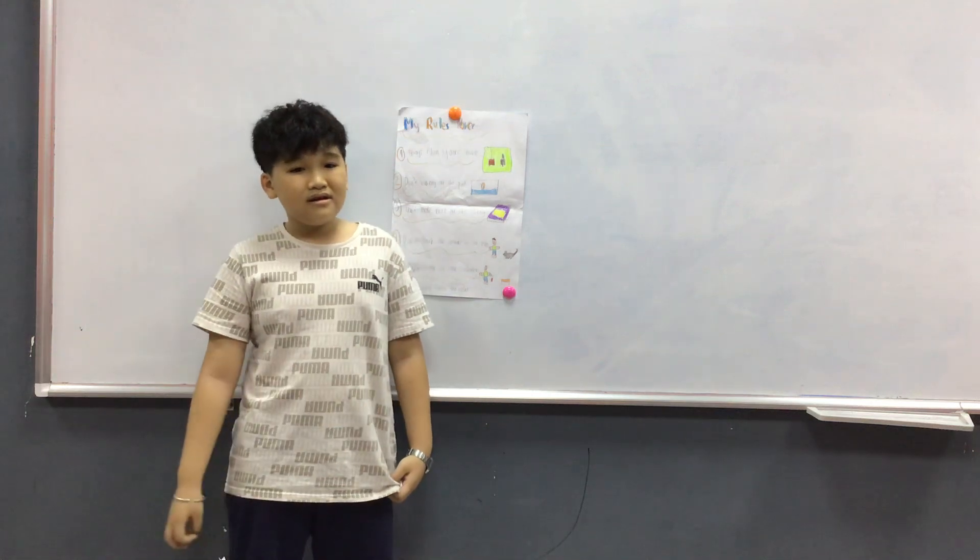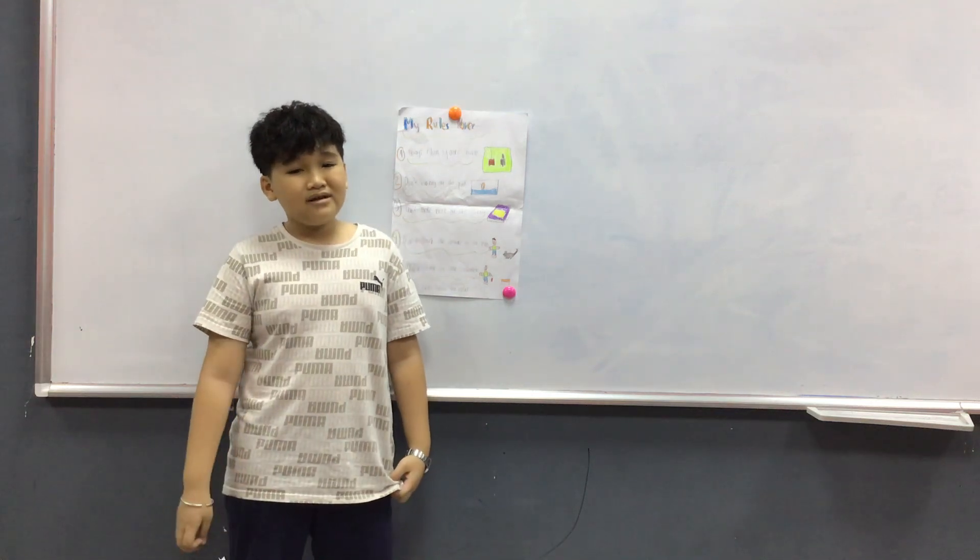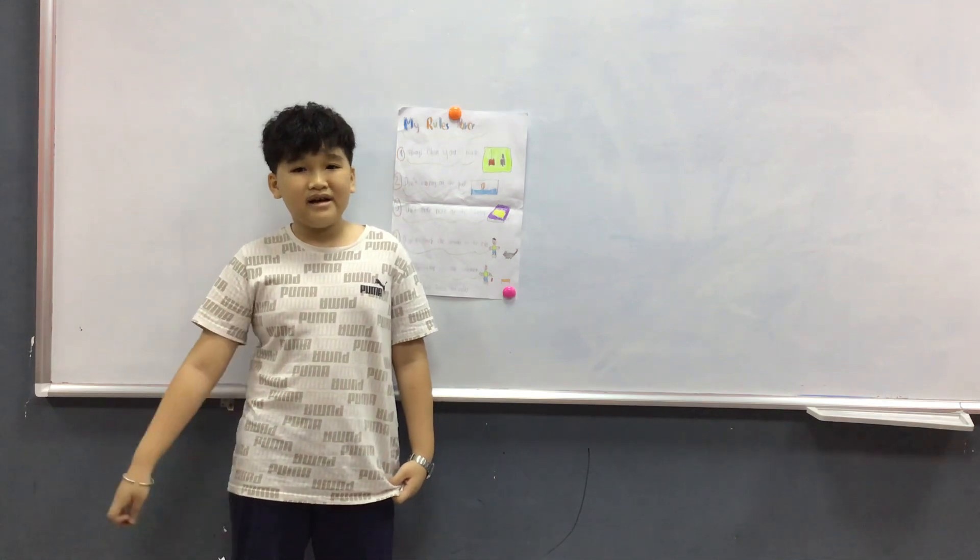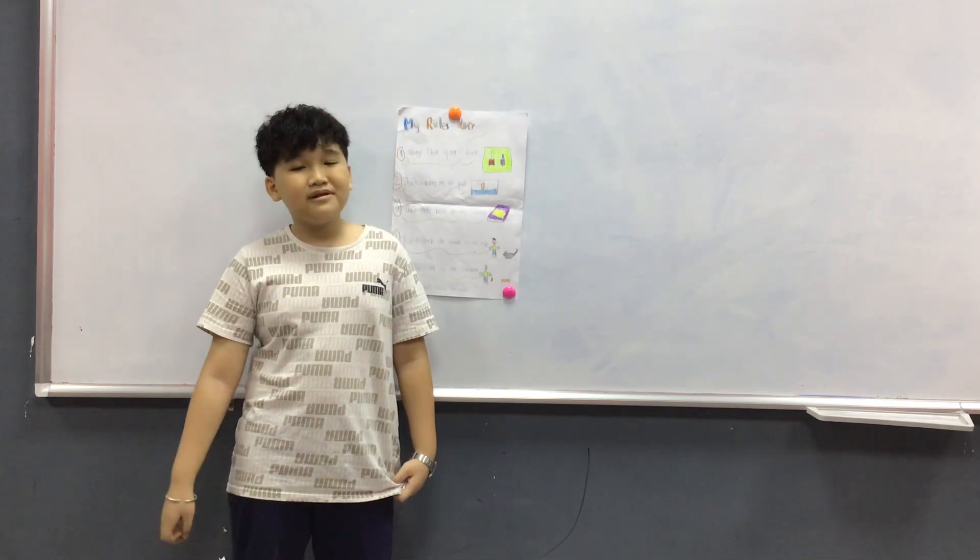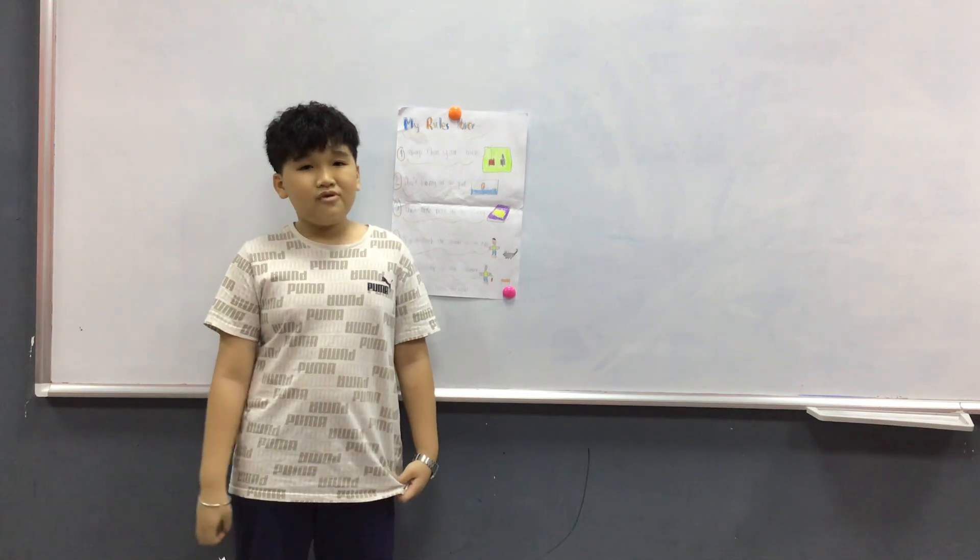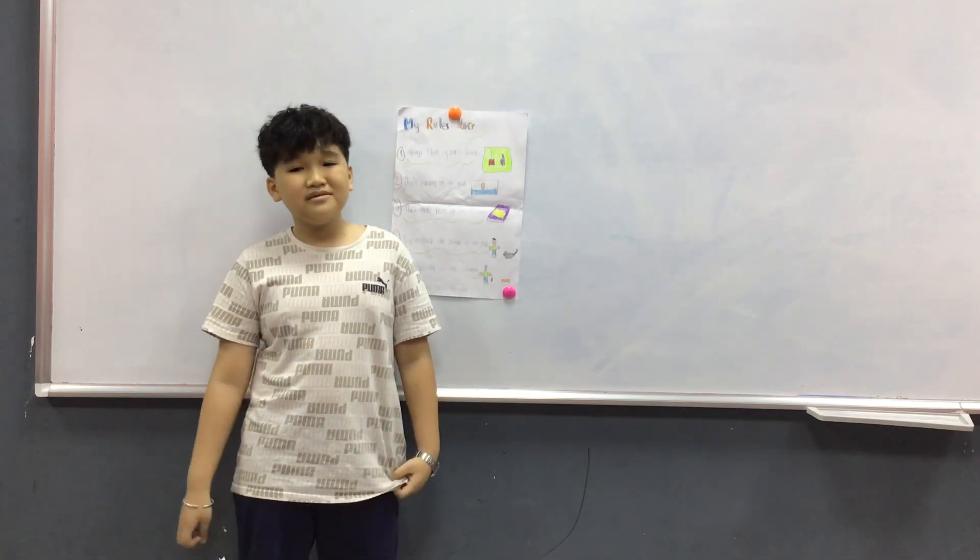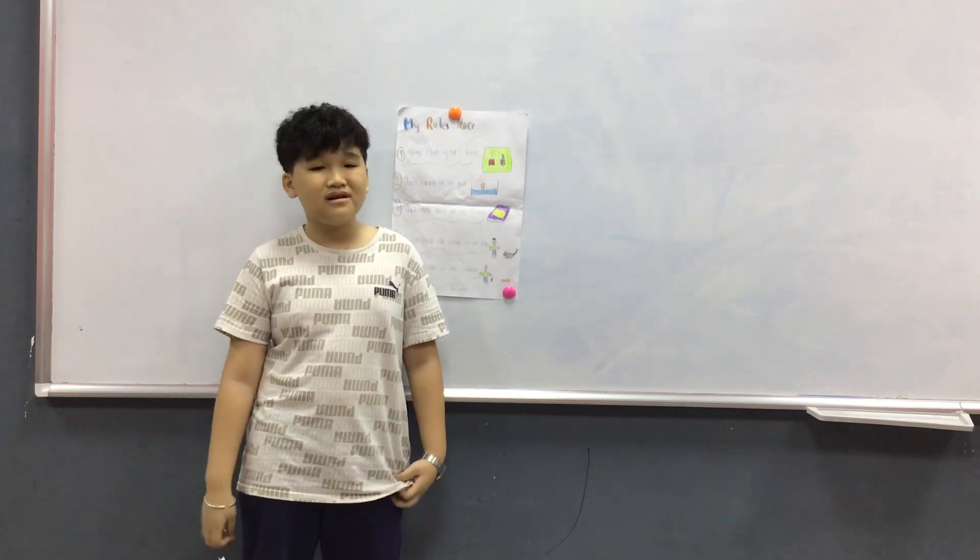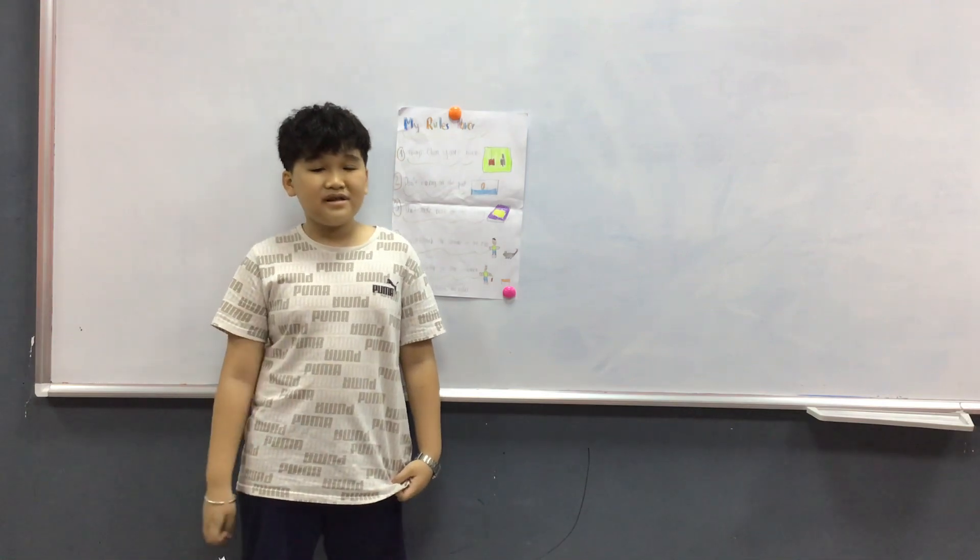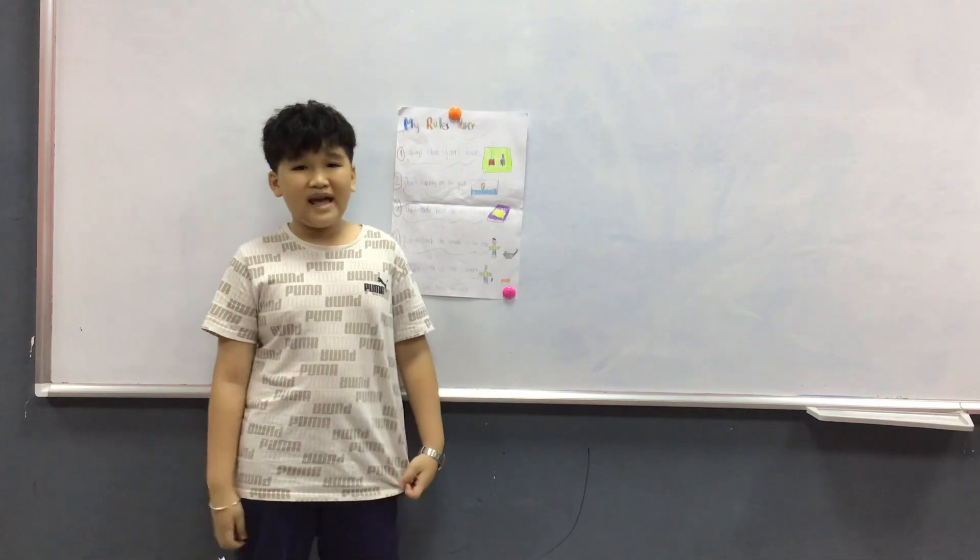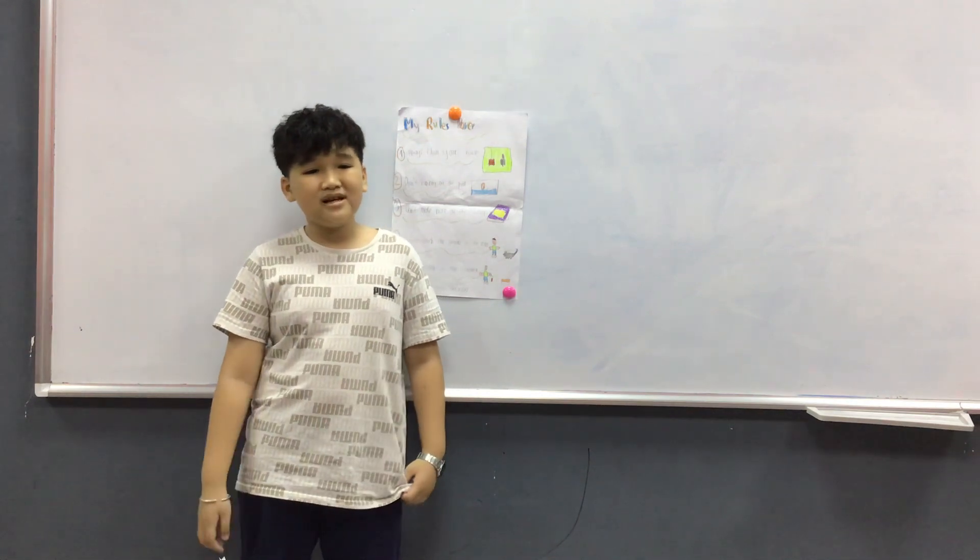The last root is line up at the cafeteria. I usually see these roots at the cafeteria. We have to follow these roots because when we do not follow these roots, we have to go to the principal office. If we break these roots, we have to go to the principal office.